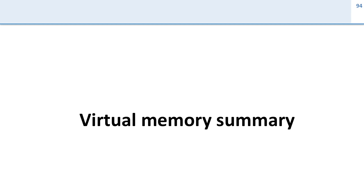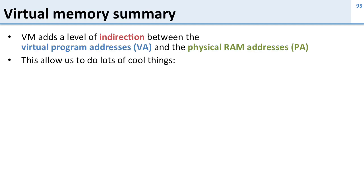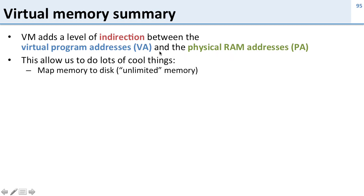Let's summarize what we've seen in virtual memory. Virtual memory is fundamentally a level of indirection — indirection between the virtual program addresses we give to each program and the physical RAM addresses we have in memory. By adding this level of indirection, we can do a lot of cool things.